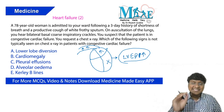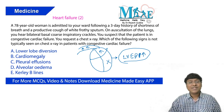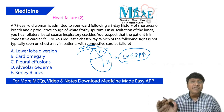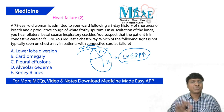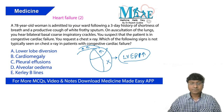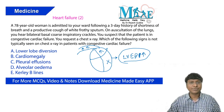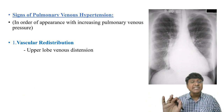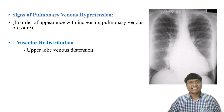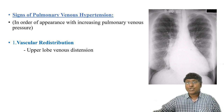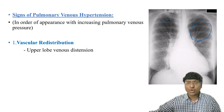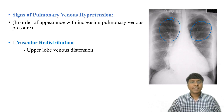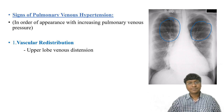The chest X-ray findings in heart failure reflect features of pulmonary venous hypertension. In the early stages, when pulmonary venous pressure rises, you will notice the presence of upper lobe venous distension. This is a very important point — it is upper lobe diversion, not lower lobe.